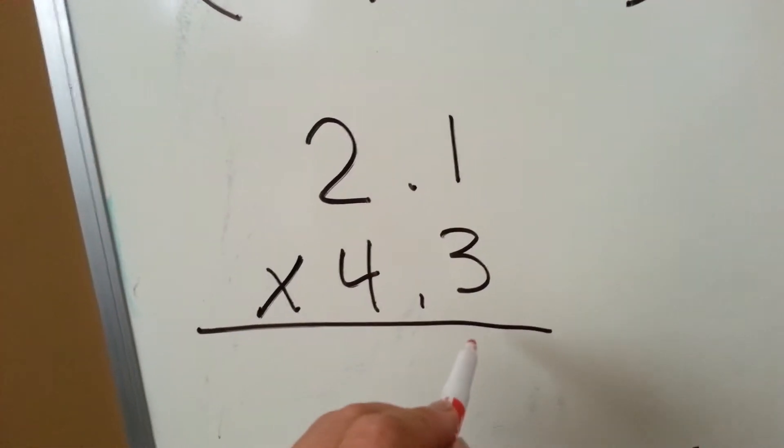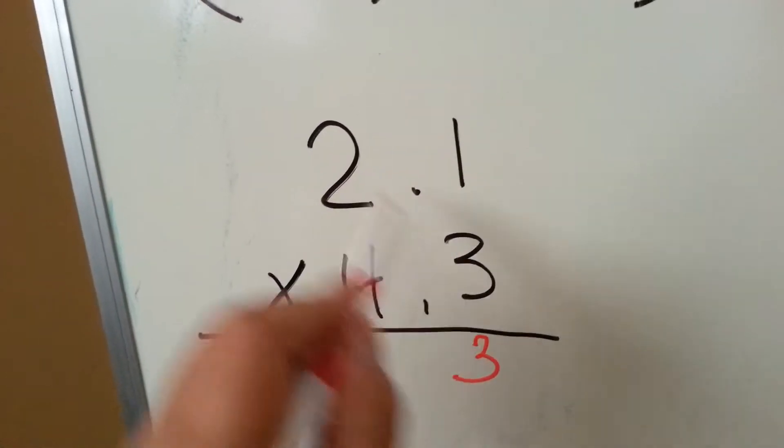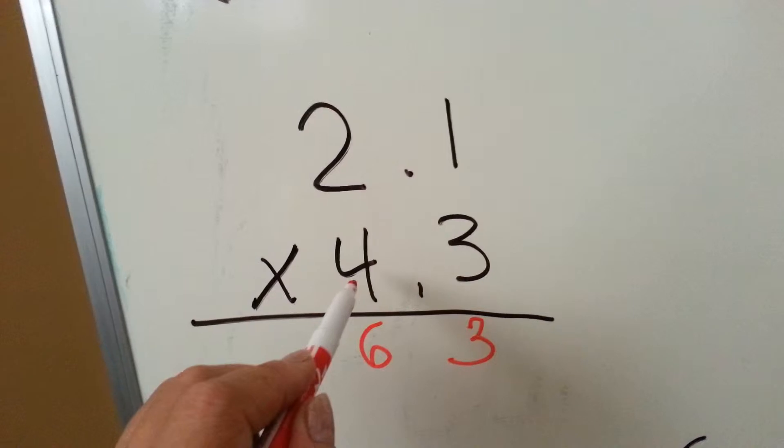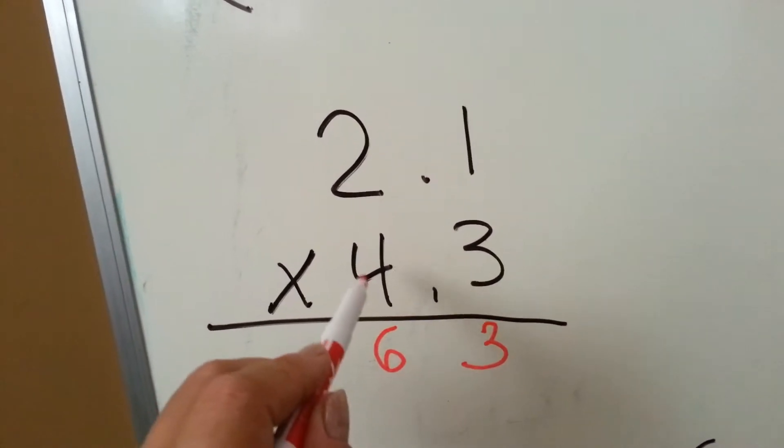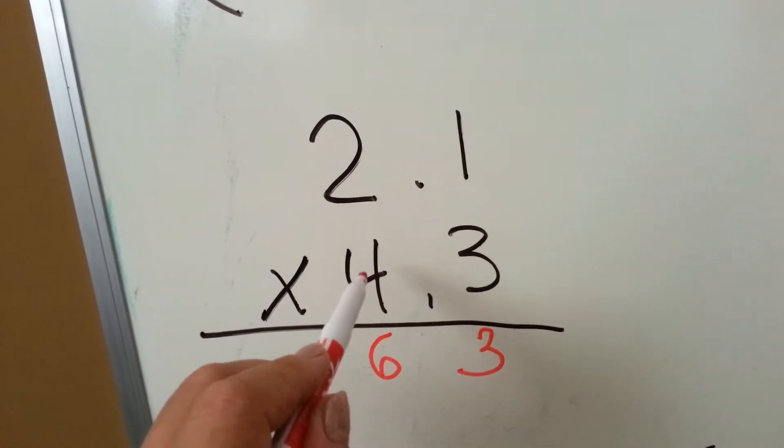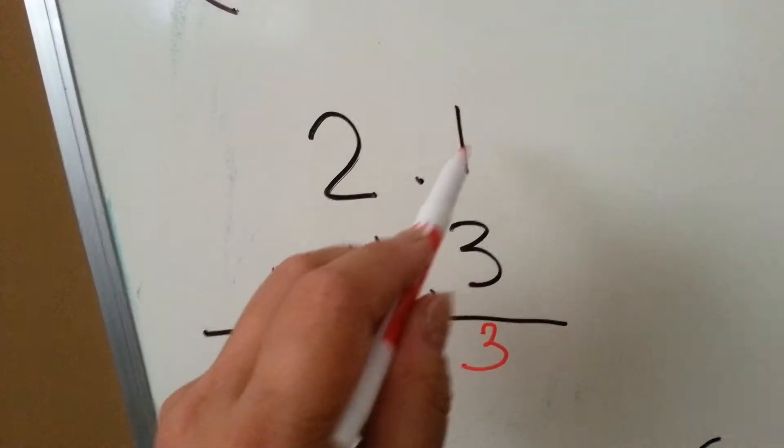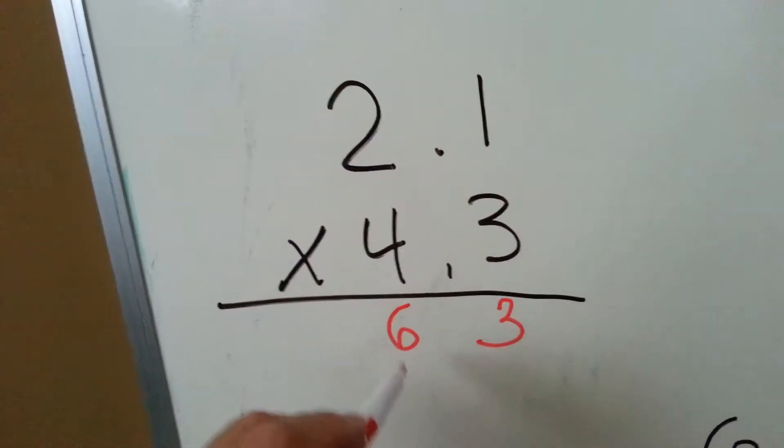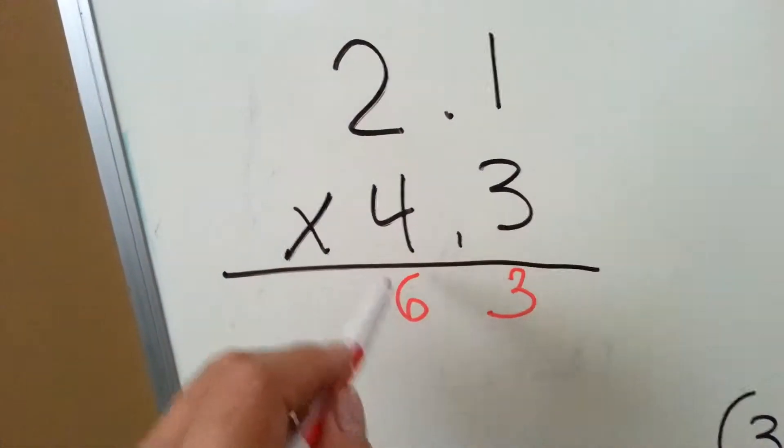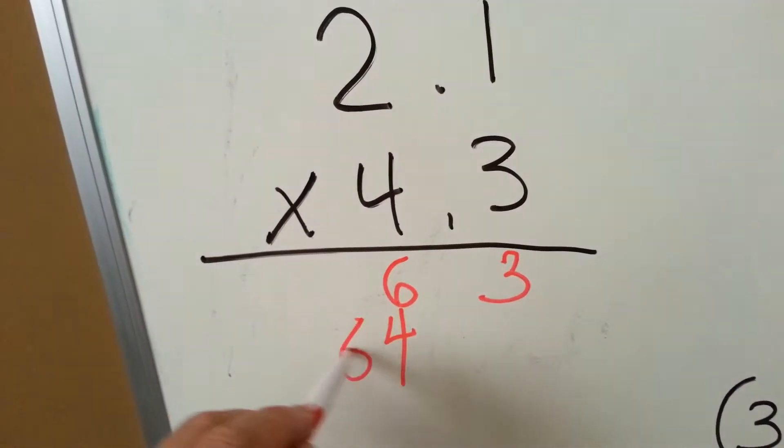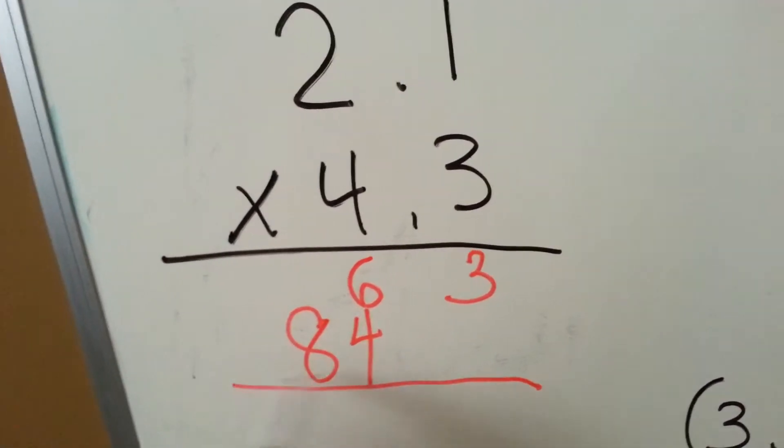3 times 1 is 3. 3 times 2 is 6. Then we would do the ones place on this side, which is really the ones place because here's a decimal point. 4 times 1 is 4, and because we're multiplying this number, we do it in this column. And 4 times 2 is 8.